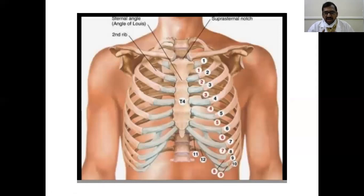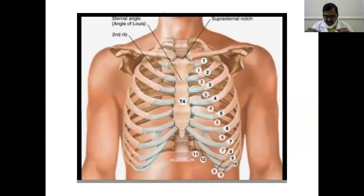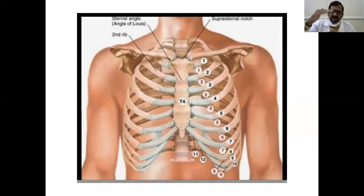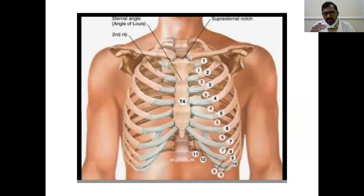The trachea divides into two principal bronchi just below the sternal angle level in adults; in children, it is just above the level of the sternal angle. The sternal angle is also the junction between the superior and inferior mediastinum — superior mediastinum above, inferior mediastinum below. The sternal angle corresponds with the lower border of the body of the fourth thoracic vertebra.